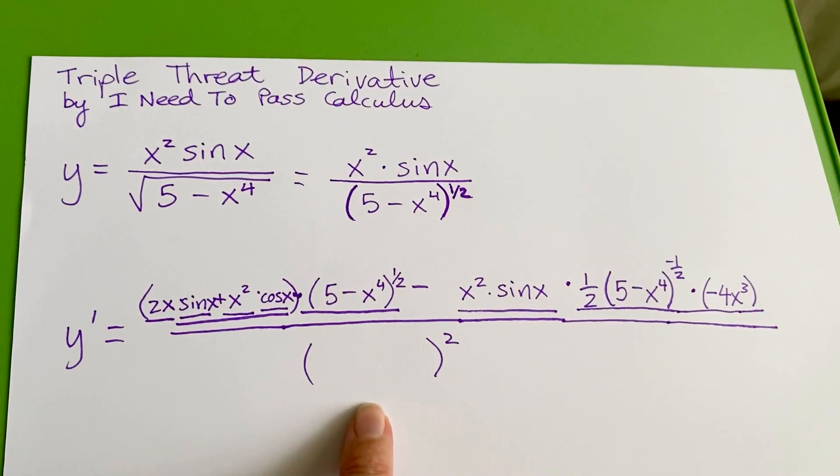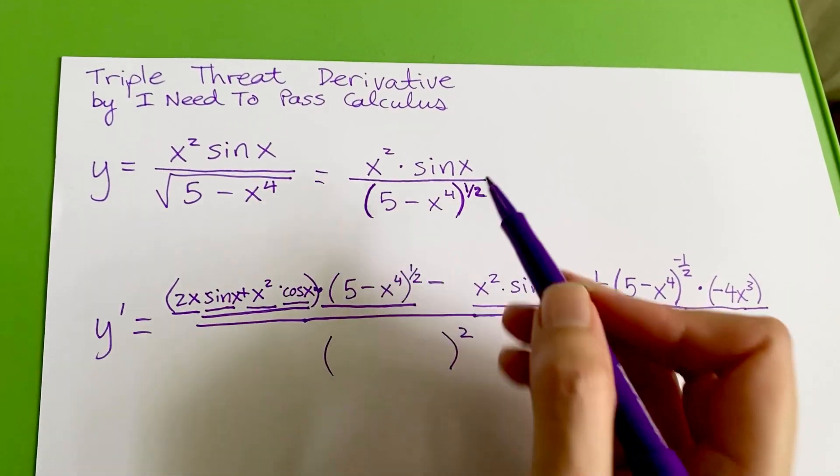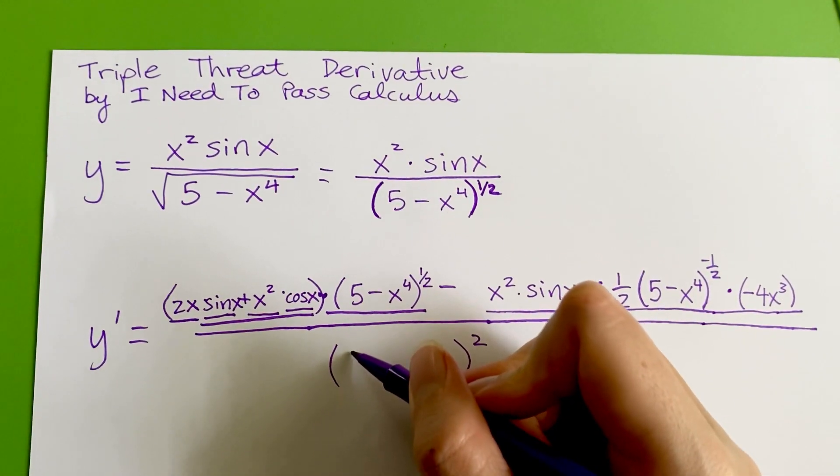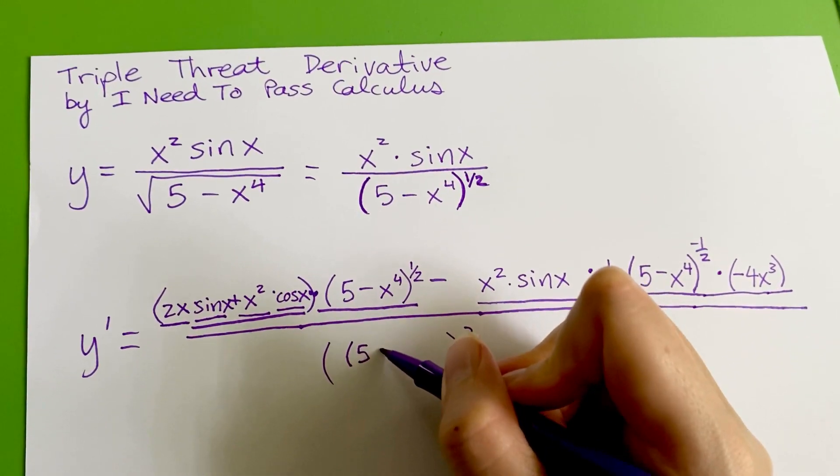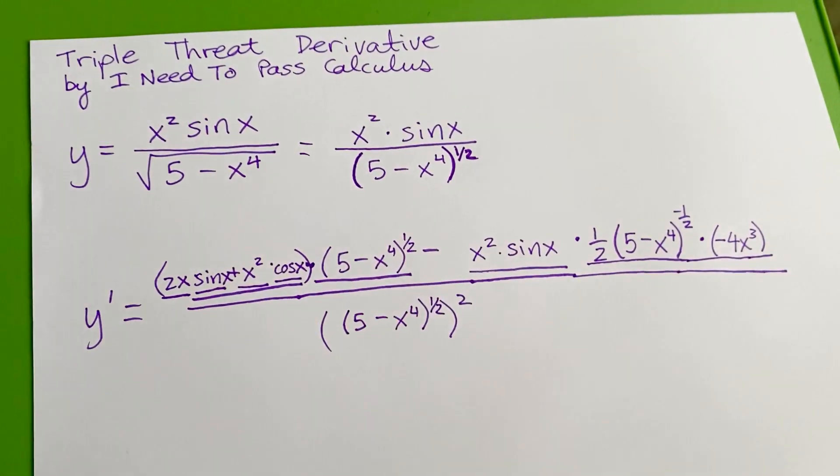Okay, and then to finish our quotient rule, we put the bottom function in the parentheses, and that's going to be squared. No derivative at all. We just copy and paste it in here. Five minus x to the fourth to the one-half all squared.